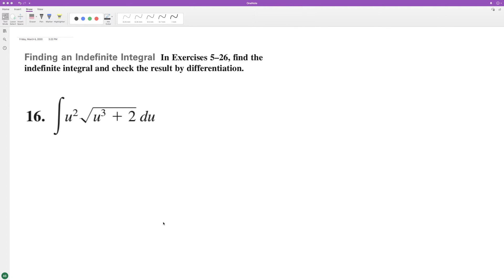We'll use u-substitution. Well, there's already u in there, but we can still do that. So we'll set u equal to u cubed plus 2, and du is equal to 3u squared.